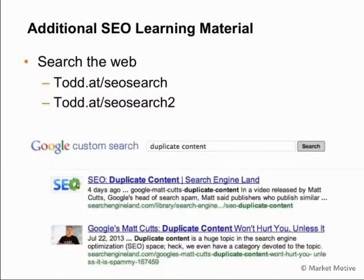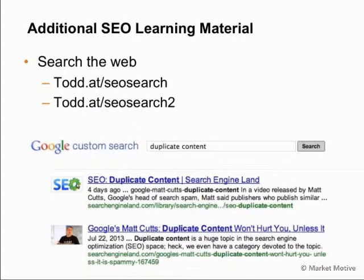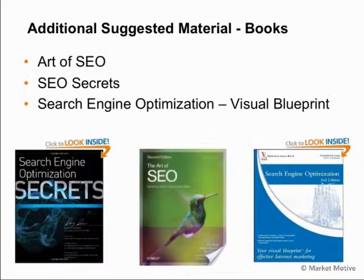This is a lot to cover. If you need more information on any of the topics or terminology, I've set up custom searches — Todd at SEO Search and Todd at SEO Search 2 — to help answer questions with a Google search customized around SEO. For books on the topic, I suggest The Art of SEO, SEO Secrets from Danny Dover, and Search Engine Optimization Visual Blueprint from Chris Jones.